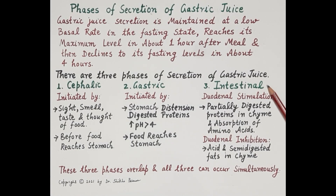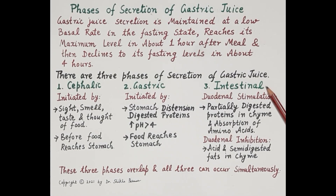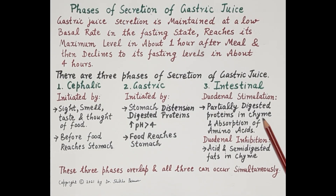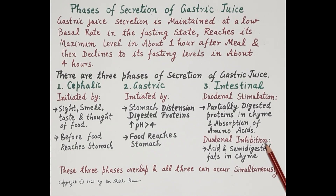The third phase is the intestinal phase, where around five to ten percent of total gastric juice is produced. This phase occurs when the chyme is passed into the duodenum from the stomach. Chyme is a thick semi-solid mass of partially digested food which is pushed from the stomach into the duodenum.